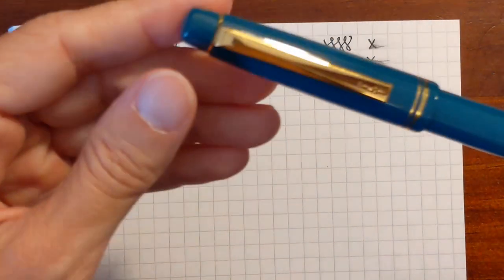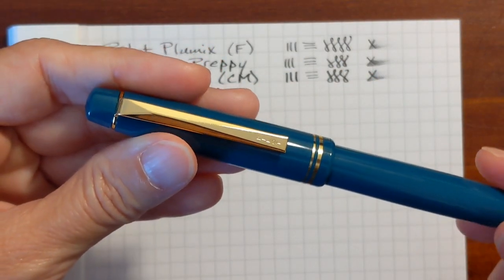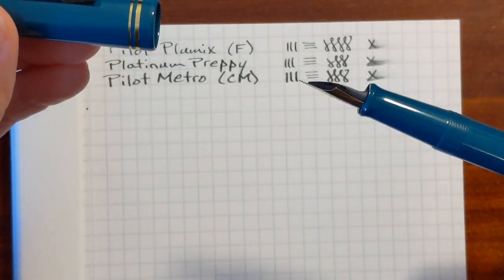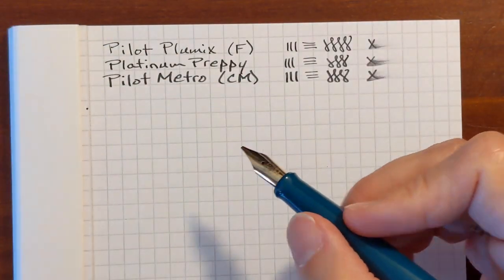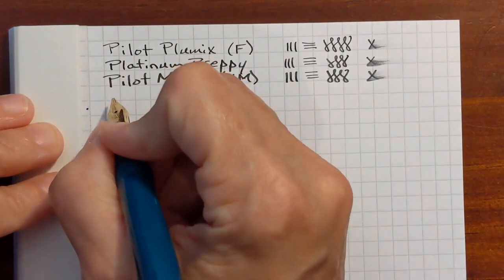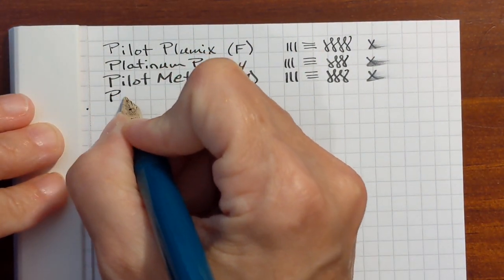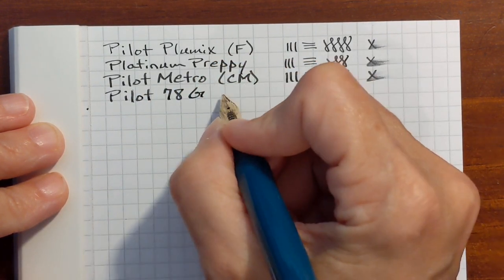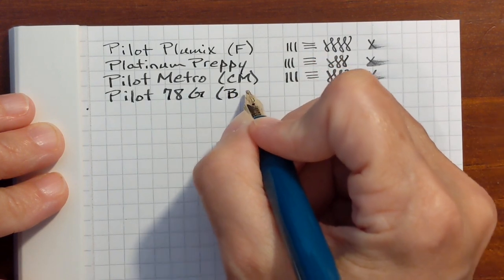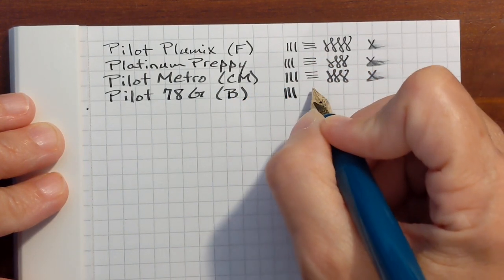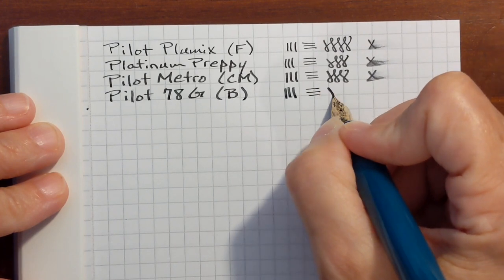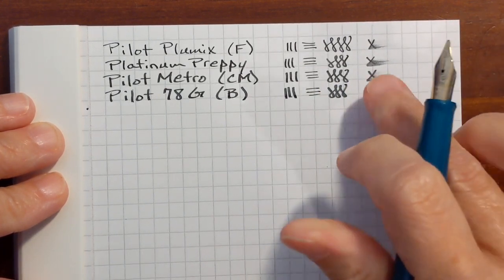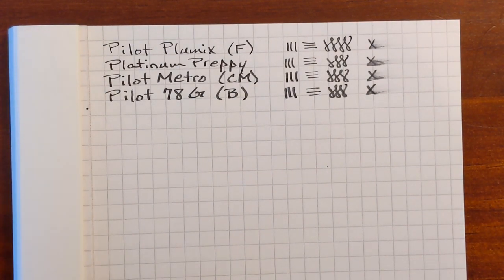And this is a broad nib on my 78G, not a G+. You can tell that each step up is just a little bit wider.